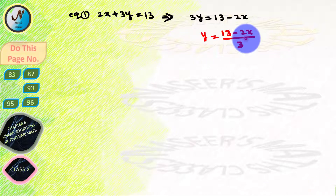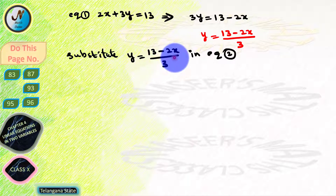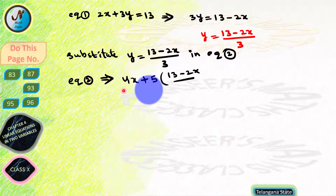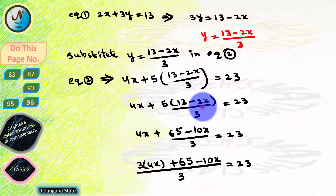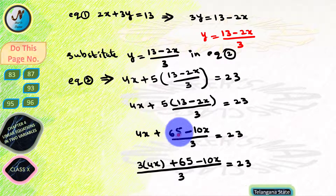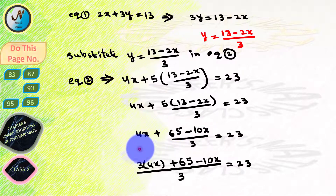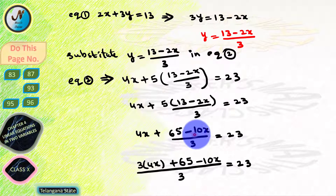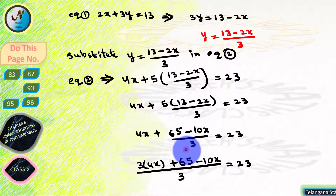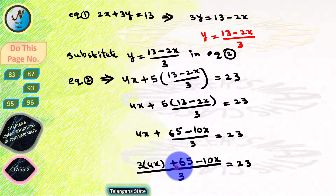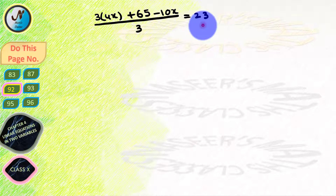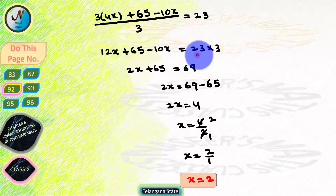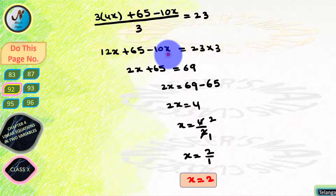From equation 1, we write y equals (13 minus 2x) by 3. Substituting in equation 2: 4x plus 5 into (13 minus 2x) by 3 equals 23. By distributive law, 5 times 13 equals 65 and 5 times 2x equals 10x, giving 4x plus (65 minus 10x) by 3 equals 23. Taking LCM 3 in denominator: (12x plus 65 minus 10x) by 3 equals 23. Transposing 3 to RHS: 12x plus 65 minus 10x equals 69.